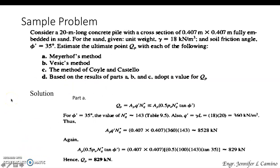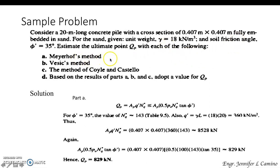Sample problem: Consider a 20-meter long concrete pile with a cross section of 0.407 m by 0.407 m, fully embedded in sand. The unit weight gamma is 18 kN/m³ and the soil friction angle is 35 degrees. Estimate the ultimate point bearing capacity Q sub P using: (A) the Meyerhof method, (B) the Vesic method, and (C) the Coils and Castillo method. Then adopt a value for Q sub P based on the results. For the Meyerhof method, Q sub P must be less than or equal to a limiting expression, so we need N sub Q asterisk.